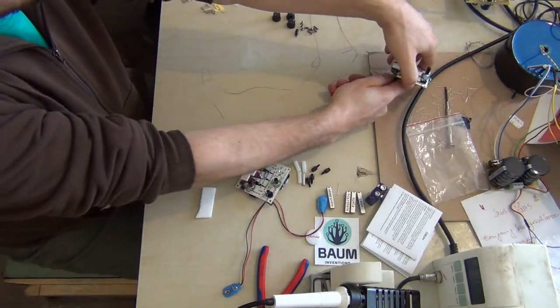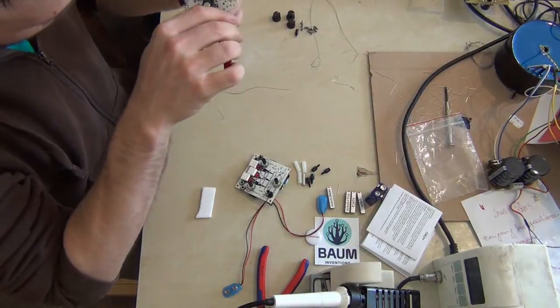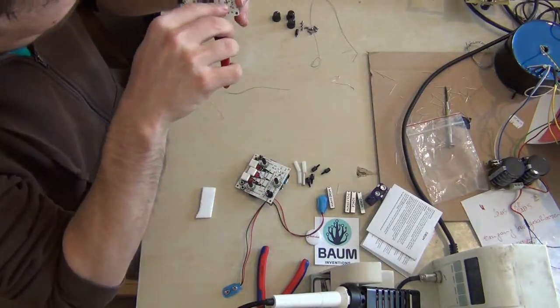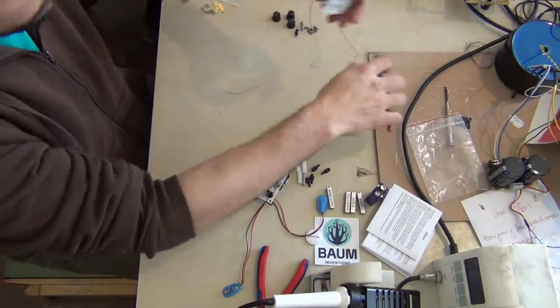This switch switches between the nine volt battery and the DC power jack. If one of them is not connected it is off in one position.